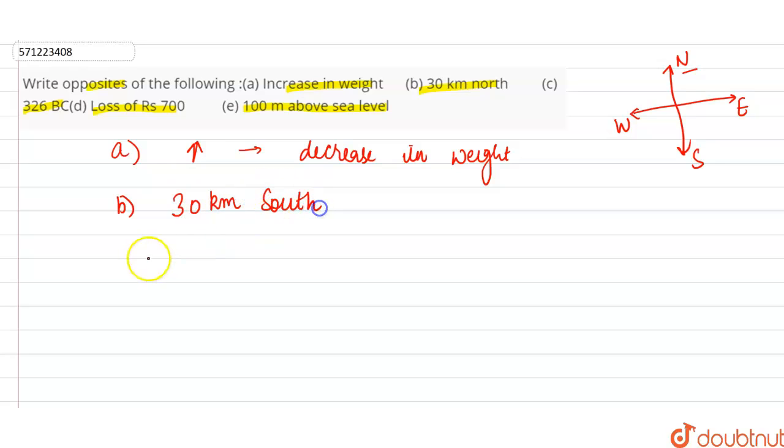Part C is 326 BC, so the opposite of 326 BC is 326 AD.